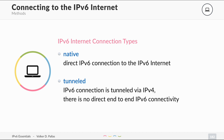With a tunneled connection, if IPv4 fails or behaves badly, your IPv6 is also broken. There is no direct end-to-end IPv6 connectivity. You should prefer a native connection, so ask your provider if you can get a native IPv6 connection with a real IP address.